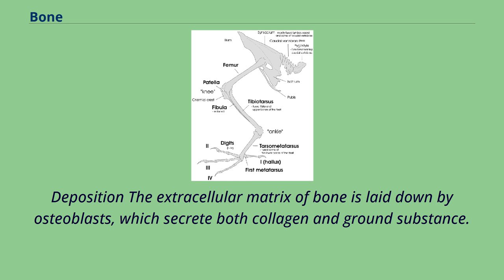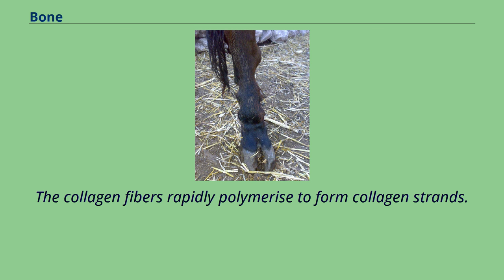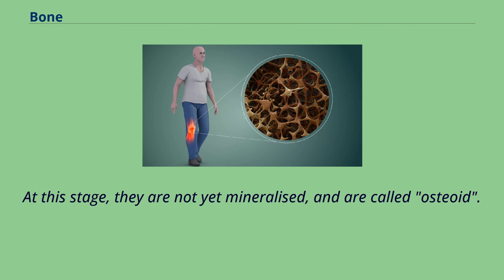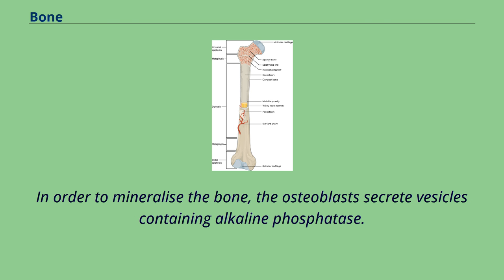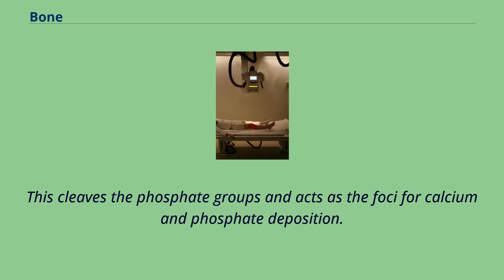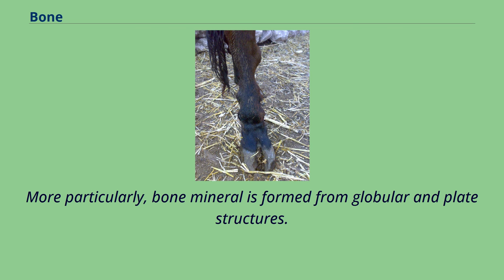The extracellular matrix of bone is laid down by osteoblasts, which secrete both collagen and ground substance. These synthesize collagen within the cell and then secrete collagen fibrils. The collagen fibers rapidly polymerize to form collagen strands. At this stage, they are not yet mineralized and are called osteoid. Around the strands, calcium and phosphate precipitate on the surface, within days to weeks becoming crystals of hydroxyapatite. In order to mineralize the bone, the osteoblasts secrete vesicles containing alkaline phosphatase. This cleaves the phosphate groups and acts as the foci for calcium and phosphate deposition. The vesicles then rupture and act as a center for crystals to grow on.